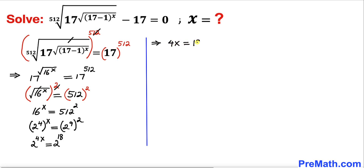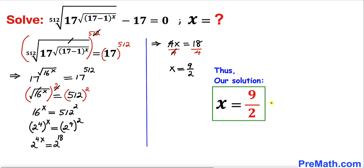Let's divide both sides by 4. This 4 and 4 cancel, so our x value turns out to be 18 divided by 4, which reduces to 9 divided by 2. Thus our solution is x equals 9 over 2. Thanks for watching and please don't forget to subscribe to my channel for more exciting videos.